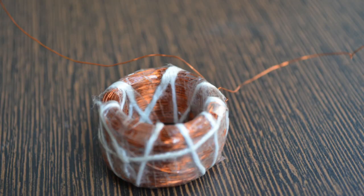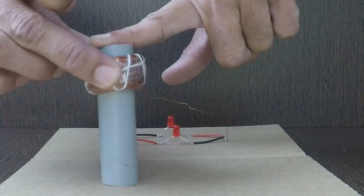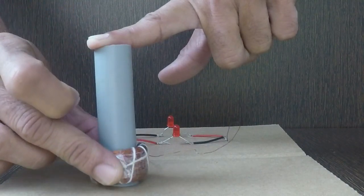The solenoid is built with 2000 turns of coated copper wire. This can easily move around the PVC pipe.